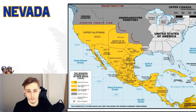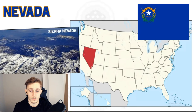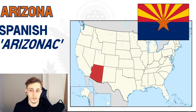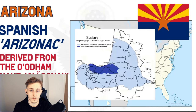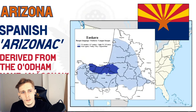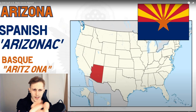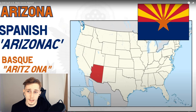Next to California is Nevada, also named by the Spanish. Most of these south/west states were first part of the Spanish colonial empire, then Mexico, then conquered by the US. Nevada means 'snow-covered,' coming from the local mountain range Sierra Nevada. Then Arizona — the state's name appears to originate from the Spanish 'Arizona,' which derives from the O'odham native word 'Ali Sonak' meaning 'small spring.' Some also point to the Basque phrase 'Aritz Ona' as a possible origin, and I notice the Arizona flag colors actually look like Basque colors!